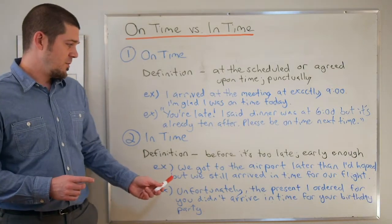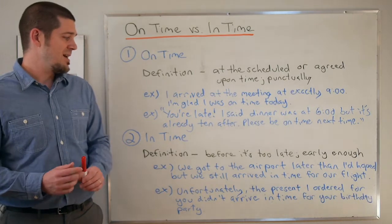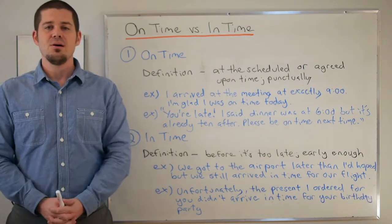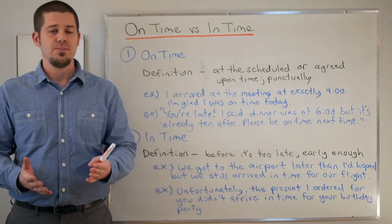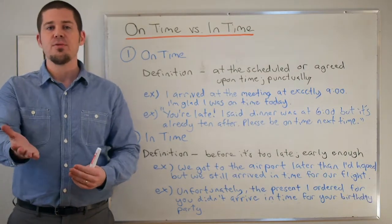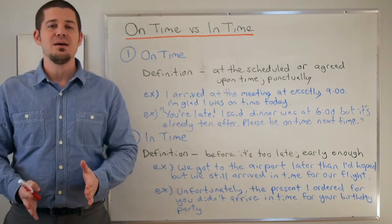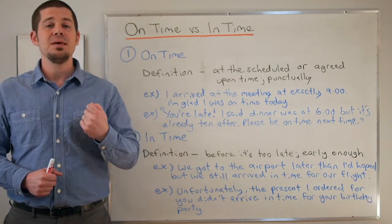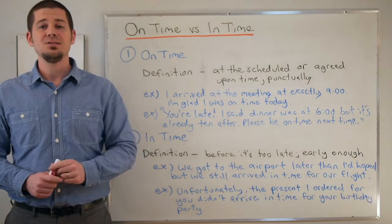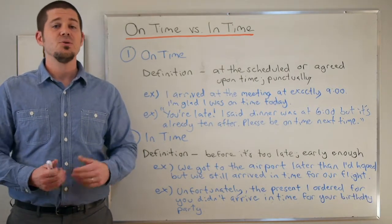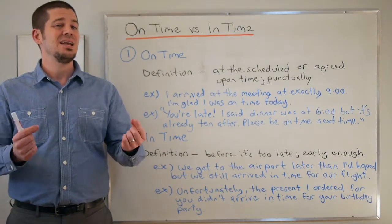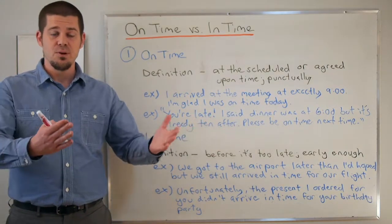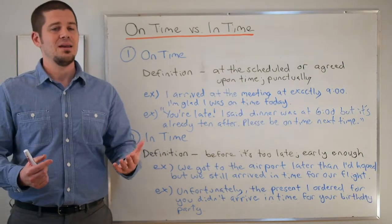Another example: 'Unfortunately the present I ordered for you didn't arrive in time for your birthday party.' Imagine your birthday party is April 1st but your actual birthday is April 3rd. Today is April 1st — the party — and the present hasn't arrived. It hasn't arrived early enough for me to give it to you at the party. But let's say it arrives the next day, April 2nd. I can still give it to you for your birthday, but I didn't get it in time for the birthday party on April 1st — it didn't come early enough.